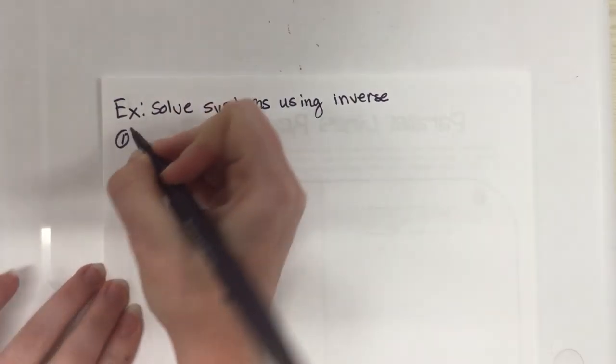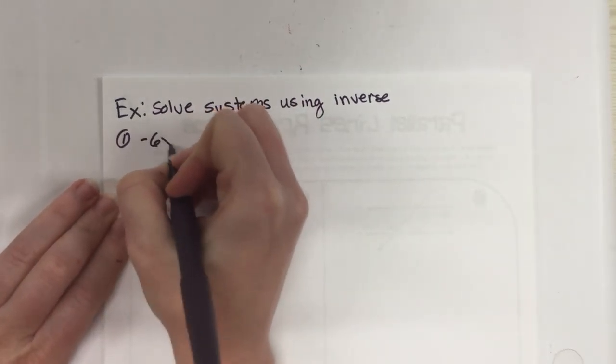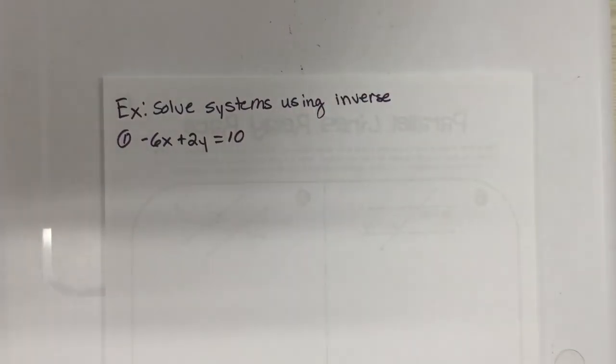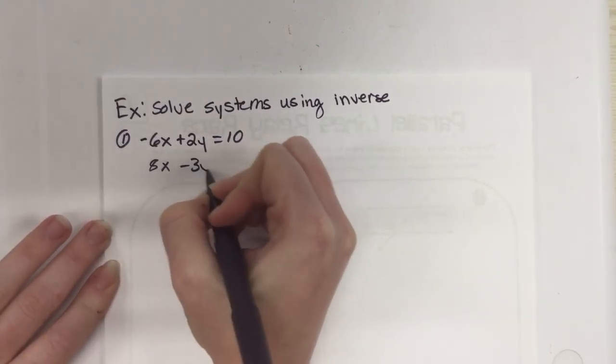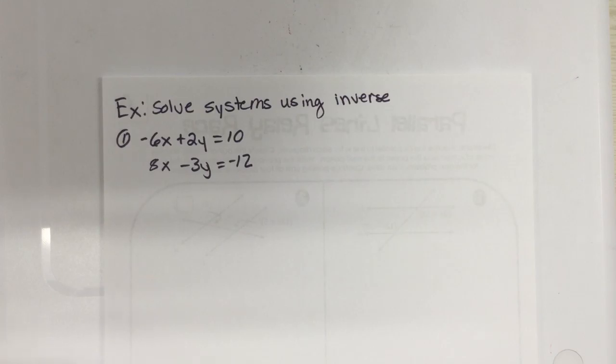We are going to solve instead of using reduced row echelon form, because that's really cool, don't get me wrong, it's probably my favorite. There's other ways to use matrices to solve systems, and one is actually using that inverse thing we learned about last time. We're going to use the inverse to solve.